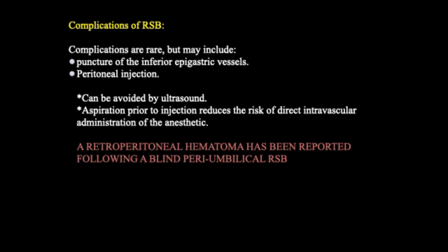Rectus sheath blocks are commonly used in practice. Their complications are rare, but they may include injury to the inferior epigastric vessels or peritoneal injection. These complications can be avoided by the use of ultrasound and by aspiration prior to injection to reduce the risk of direct intravascular administration. Retroperitoneal hematoma has been reported following blind peri-umbilical rectus sheath block.